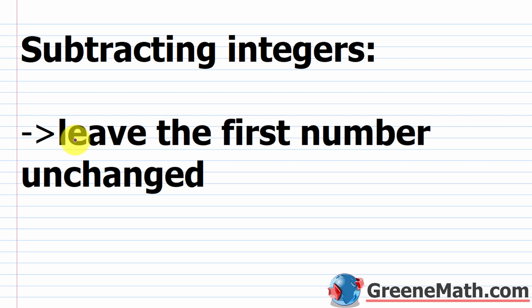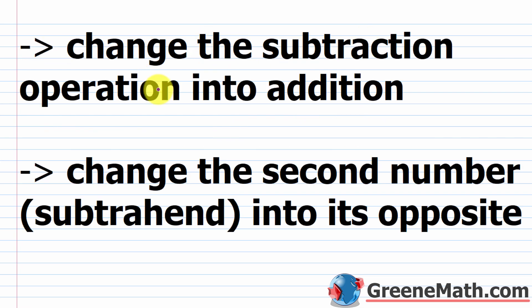The first thing you want to do is leave the first number — the leftmost number of the subtraction problem, called the minuend — unchanged. The second thing is to change the subtraction operation into addition, so instead of a minus you put a plus. Then the last thing is to change the second number, the rightmost number called the subtrahend, to its opposite — just change the sign of the number.